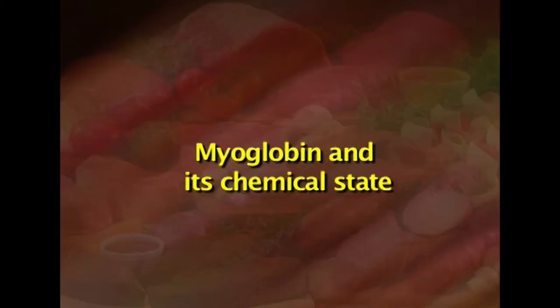The first quality parameter is meat color, which is generally the total visual perception of meat. The hue, chroma, and value of meat color are based on the quantity of the principal muscle pigment called myoglobin and its chemical state. Meat color generally varies with species, sex, age, and even among different muscles of the same species.